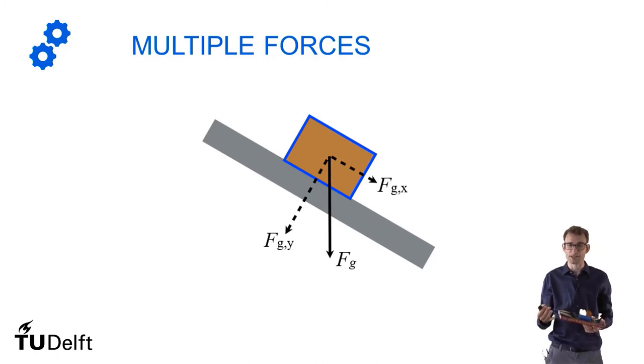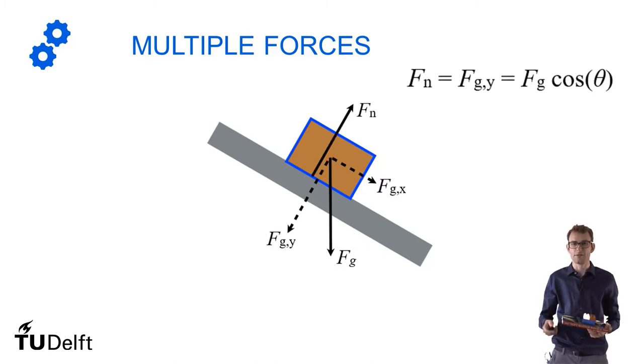So if we want to know how big the normal force is, that's only the component of gravity that's pointing towards the surface. So we have to decompose the gravitational force and find the component that's perpendicular to the surface. And that will give a reaction force, which is the normal force.